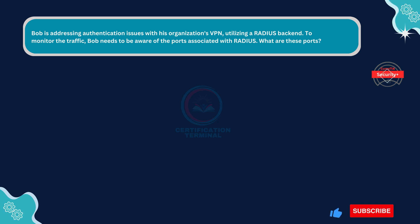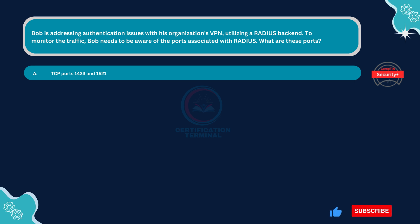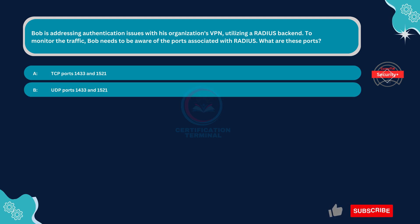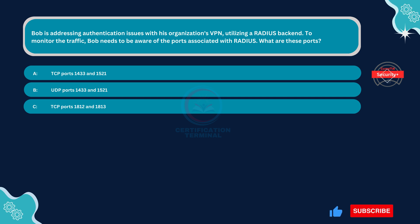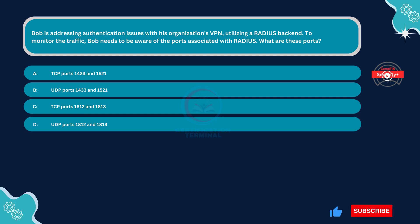Bob is addressing authentication issues with his organization's VPN, utilizing a RADIUS backend. To monitor the traffic, Bob needs to be aware of the ports associated with RADIUS. What are these ports? Option A: TCP ports 1433 and 1521. Option B: UDP ports 1433 and 1521. Option C: TCP ports 1812 and 1813. Option D: UDP ports 1812 and 1813.